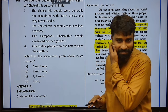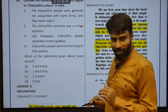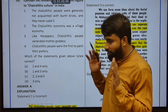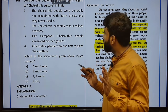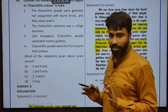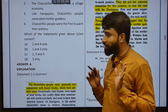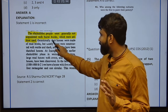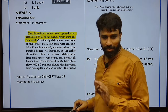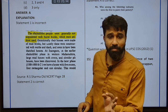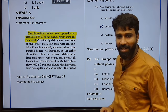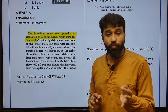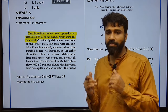The Chalcolithic economy was a village economy — that might be a possibility. There are out of 250 sites, only 6 sites were cities. Generally not acquainted with burnt bricks — which were seldom used, not never used. 'Not frequently used' is different from 'never used.' Occasionally, their houses were made of mud bricks, but mostly these were constructed with wattle and daub and seem to have been thatched houses.